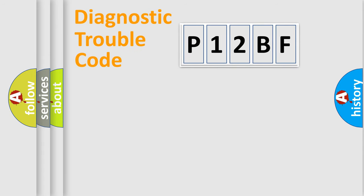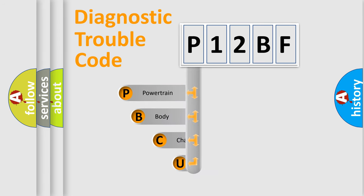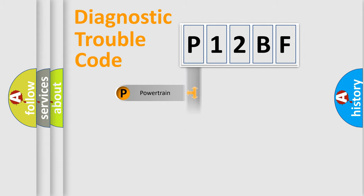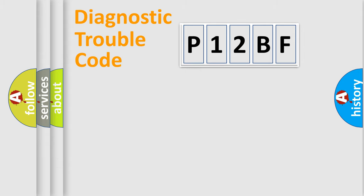First, let's look at the history of diagnostic fault code composition according to the OBD-2 protocol, which is unified for all automakers since 2000. We divide the electric system of automobile into four basic units: Powertrain, Body, Chassis, and Network.